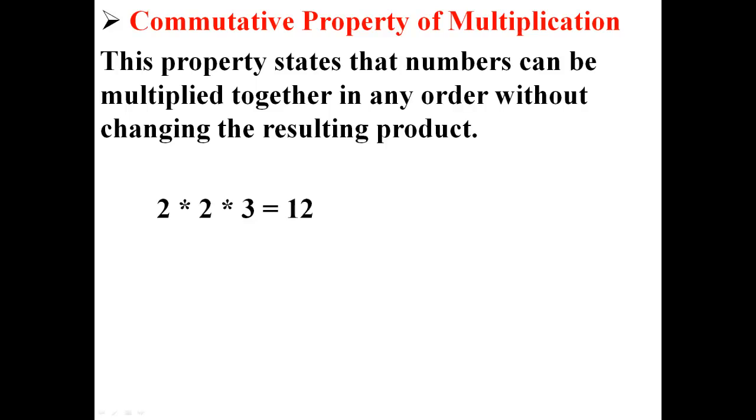Here's an expression that's a little bit more complicated. Here we have 2 times 2 times 3 equals 12. No matter what order those numbers are in, if we're multiplying all of them, the product will always stay the same.